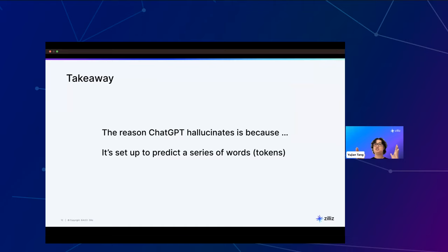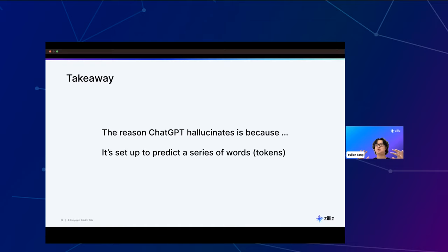The reason ChatGPT hallucinates is because it's set up to predict a series of words or tokens. It is not a direct match, not a fuzzy match, not a search engine — it is an advanced statistical method set up to predict a series of words. So how do we deal with this hallucination? One key piece is you need a way to verify or validate your knowledge — to know where the data is coming from. That's where citations come in.